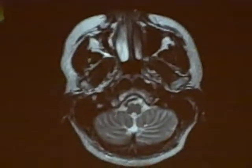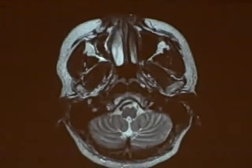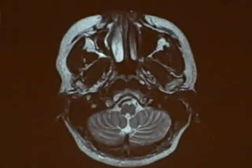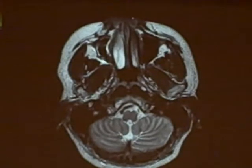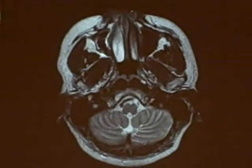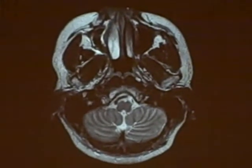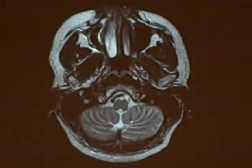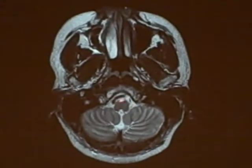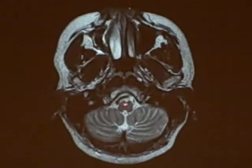Back here, the cerebellum and the medulla. MRIs look very well at soft tissue. We have a nice look here at the cerebellum and the medulla.